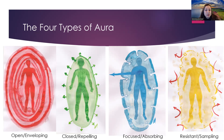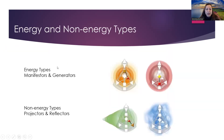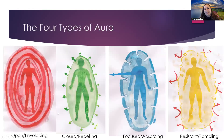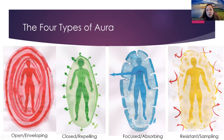At the beginning, human design was more about 'to do or to wait' — the energy and non-energy distinction. Later, the four auras were specifically put into four types.